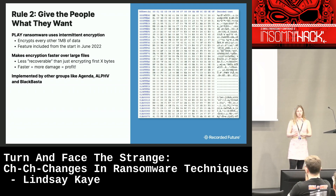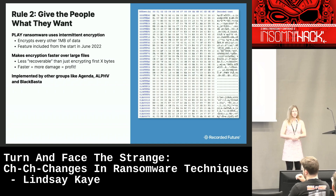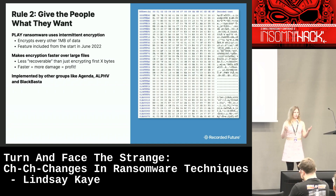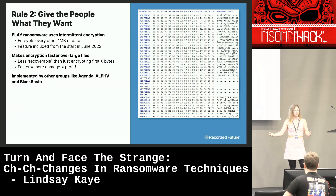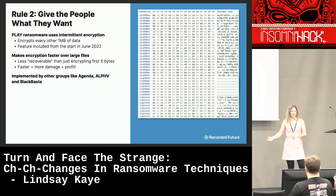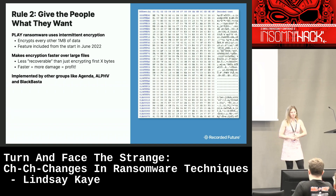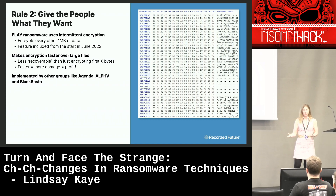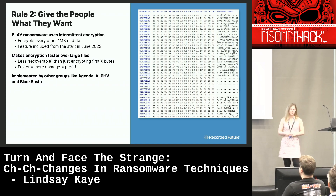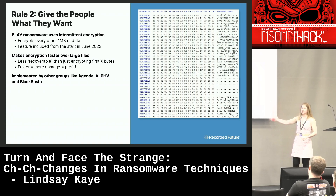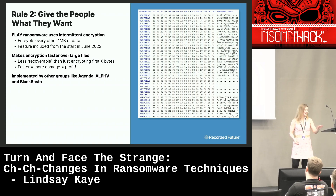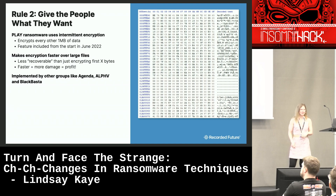Doing intermittent encryption also makes files less recoverable than just encrypting the first however many bytes. Some threat actors would encrypt the first 10 megabytes and leave the rest — great on small files, but not so great on files that are 5, 6, 7 gigs because there's more data to recover. Other well-known groups are also implementing this: Agenda, Alpha, and Black Basta, to name a few. You can see what the intermittent encryption looks like from a file perspective.